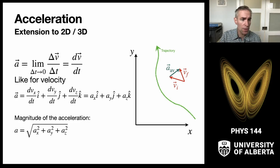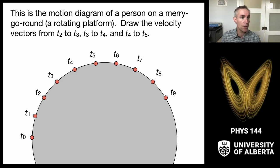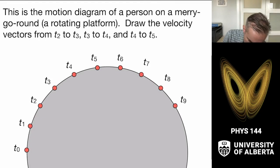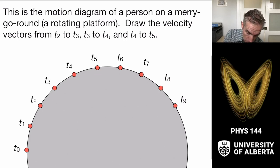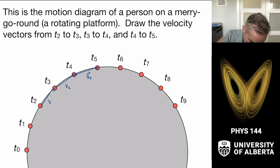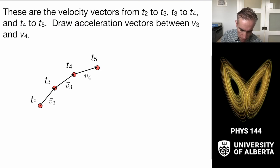For a graphical representation, consider drawing the velocity vectors from t2 to t3 to t4 to t5. The velocity vectors connect the initial to the final position at each step: v2, v3, and v4. The velocity vector is found by taking the vector that connects the initial to the final position over each interval, giving three velocity vectors v2, v3, and v4.